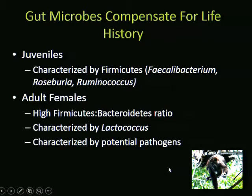Females also tended to be characterized by more potential pathogens—genera associated with pathogens in various mammals. These shifts toward increased energy production or vitamin production may simultaneously shift the gut microbial community to be more susceptible to pathogens. This may be one of those trade-offs of having a plastic system.